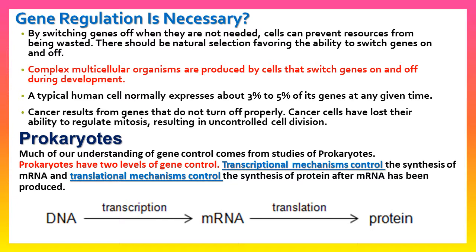A typical human cell normally expresses about three to five percent of its genes at any given time. Cancer cells result from genes that do not turn off properly. Cancer cells have lost their ability to regulate mitosis, resulting in uncontrolled cell division, which causes cancer.